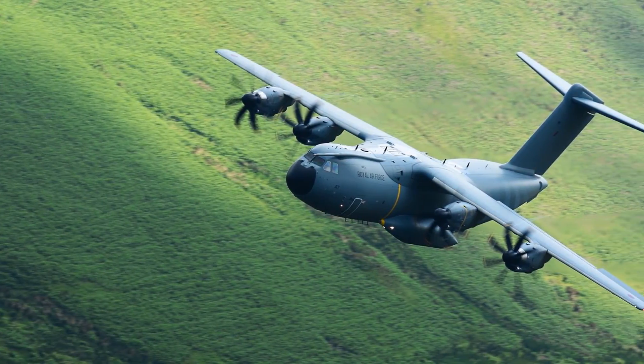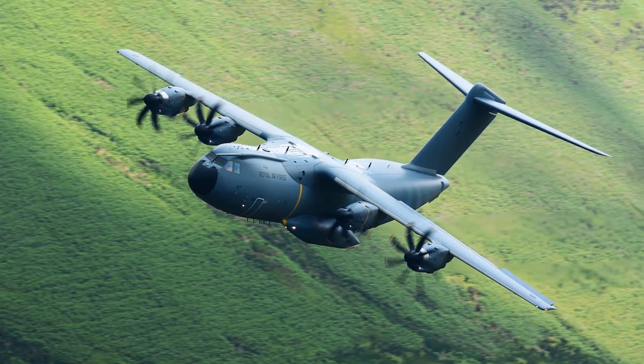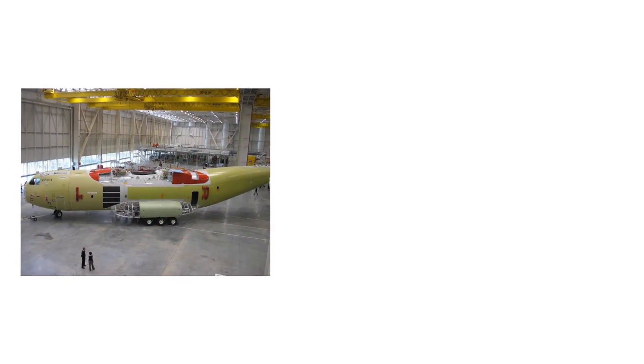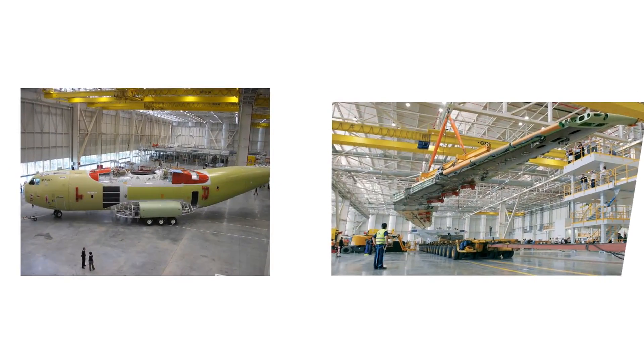We will take a closer look at the A400M airplane. You can see the aircraft in production without the wing installed on the left and you can see the wing to be installed on it on the right.